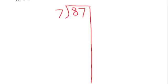So in partial quotients, it's really a process of estimating. I have 87 of something, maybe marbles, we've talked about marbles. And I'm sharing them with 7 people or I want to put them in 7 groups.